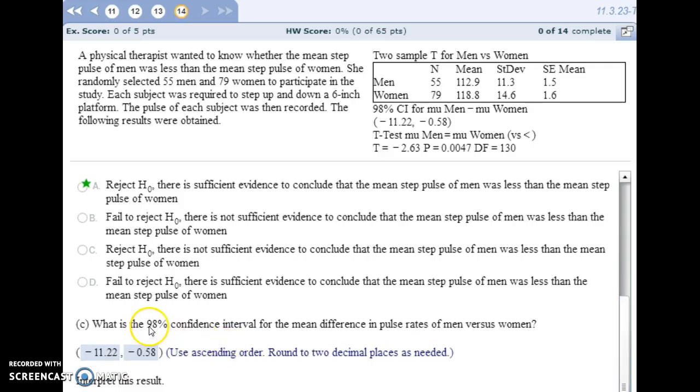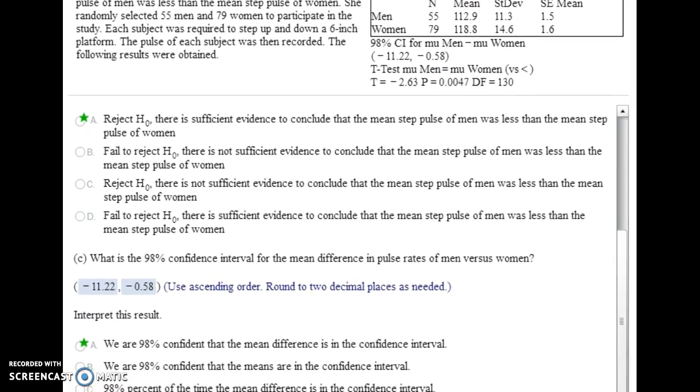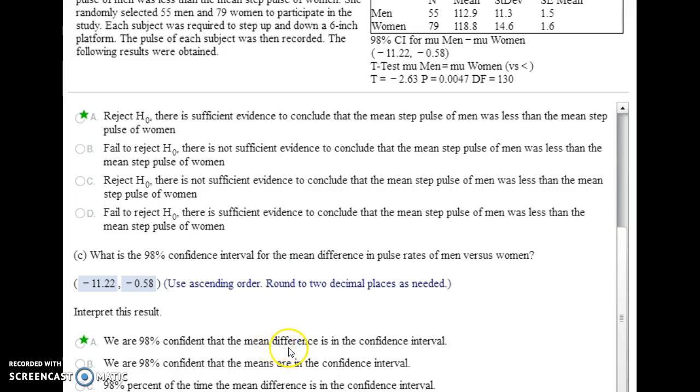And then the next part is create a 98% confidence interval, which is given. And then interpret that. We're 98% confident that the mean difference between the pulses is within this confidence interval. And since these values are all negative, the lower and upper limit are negative, that means we're 98% confident that the difference, if we subtracted the means, would be negative. And that's only going to be the case if the second value you subtract is larger than the first value, or in other words, men have a slower pulse, and you subtract the higher pulse for the women, and you get a negative answer. We're 98% confident that we're going to get a negative answer when we subtract the difference of the means.